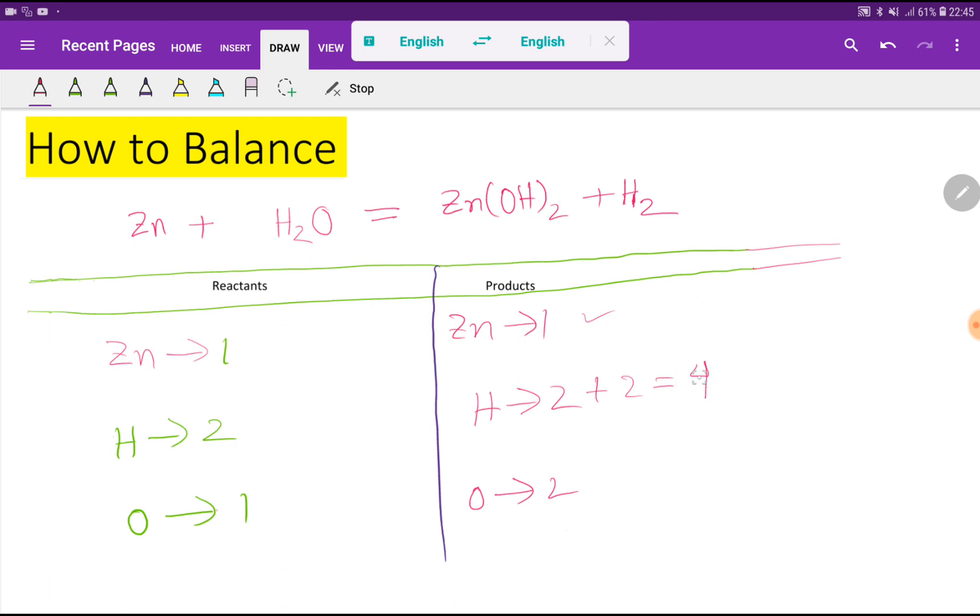To balance the hydrogen, I can multiply by two, which gives me four. If you multiply by something, that number will come before the molecule. So this two will come before the hydrogen.